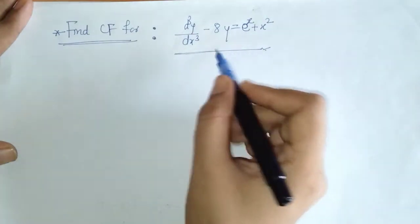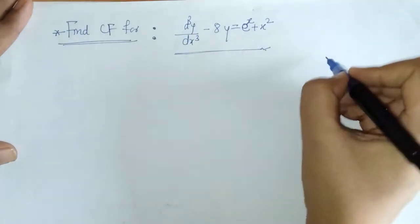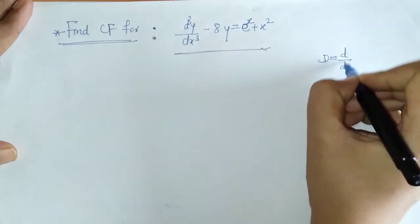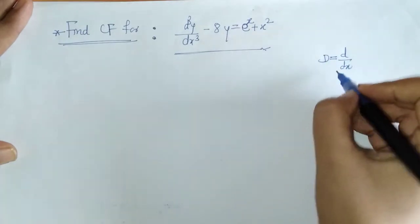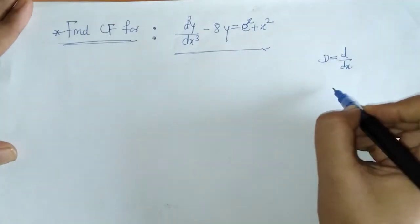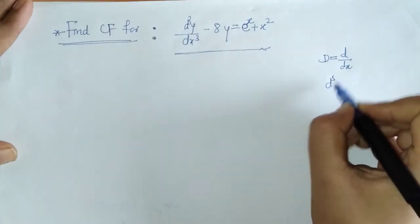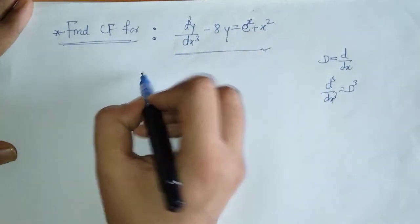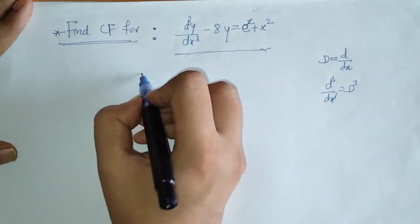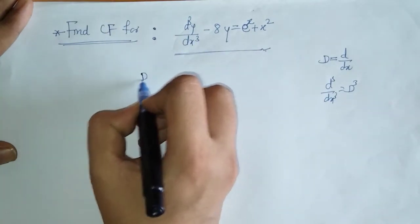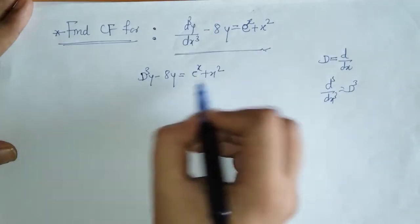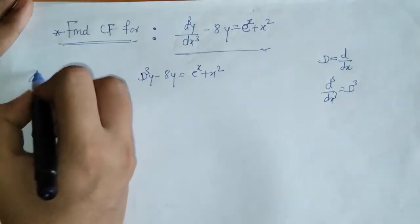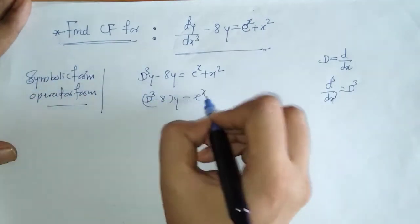First we have to write down this equation in operator form, that means we have to put d/dx as capital D. We will write down this equation in operator form, which is also known as symbolic form.